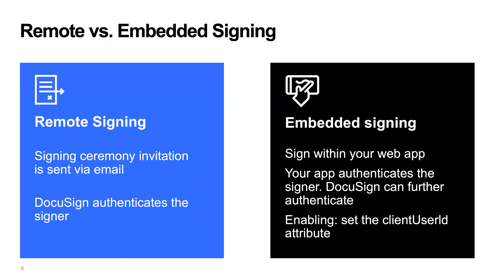There are two kinds of signing with DocuSign. The first we call remote signing — that's where the signing ceremony invitation is sent to the signer via email. In those cases, DocuSign does all of the authentication of the signer; at a minimum, the signer has to have access to that email mailbox, and it's common for senders to ask DocuSign to further authenticate the signer. Then there's embedded signing, which is our focus today. With embedded signing, the signing is within your web app, and your app has the first responsibility for authenticating the signer.